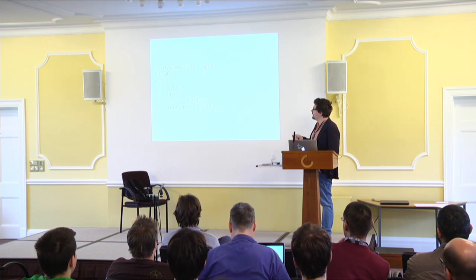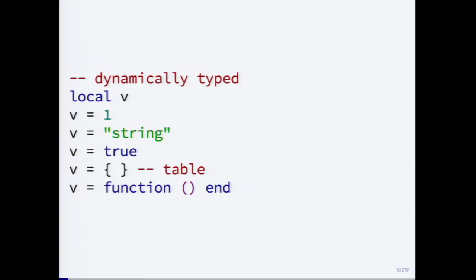Lua is a dynamically typed language, which is like JavaScript but a little bit better — depends on whom you ask. It has dynamic typing, numbers, strings, booleans. It has the table, which is a key-value dictionary, and it has closures. Simple. You can see it has a kind of ALGOL-like syntax instead of C-like syntax.